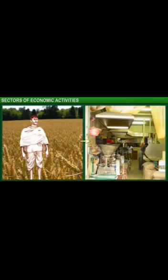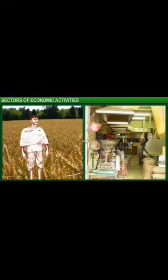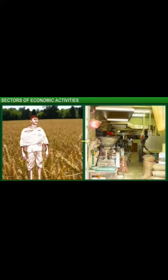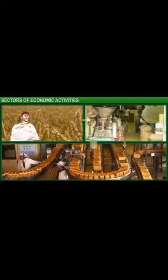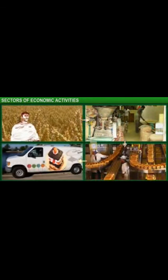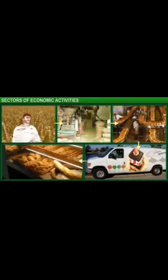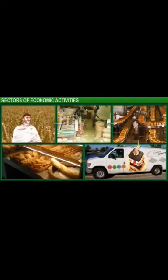The wheat produced by the farmer is ground and processed into flour at a flour mill. The flour is baked into bread in a bread factory. The bread is then transported to shops in different parts of a city and reaches your neighborhood shop from where you can buy it. All these activities that involve the production and distribution of products and services are examples of economic activities.